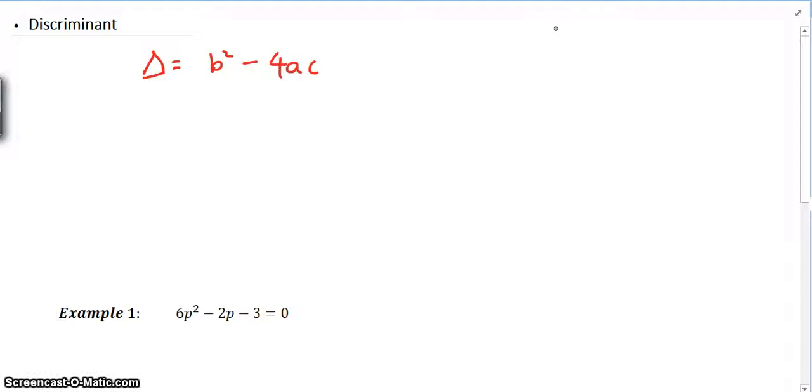It's taken from the quadratic formula in the form of x equals minus b plus or minus the square root of b squared minus 4ac over 2a. So you can see that's taken from that part.